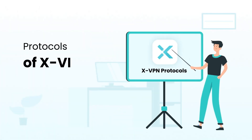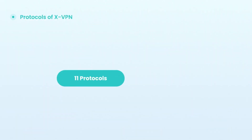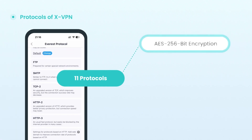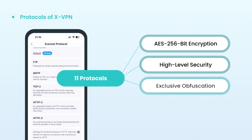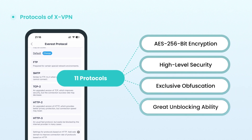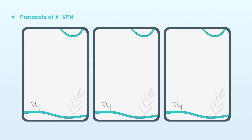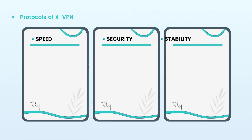Protocols of XVPN: XVPN has 11 protocols that use AES 256-bit encryption for high-level security, with exclusive obfuscation technology to enhance unblocking ability in different network environments. Each protocol has unique features for individual browsing needs.